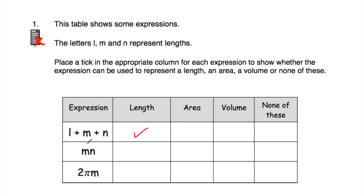MN — that's a length multiplied by a length. If you think of a rectangle, whenever you multiply a length by a length you get an area. So M times N is a length times a length, which is an area. And 2πM — well, 2 is a number, π is a number, so 2π is just a bigger number. And a number times a length is just a bigger length. A tip I give students: just ignore the number, so ignore the 2 and the π, and you're just left with M — so it's going to be a length.